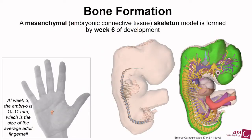Early in development, around week six, a mesenchymal skeleton forms. This embryonic connective tissue condenses in the form of a skeleton. At this point of development, the neural tube has started to form and has these little vesicles, so we're starting to see parts of the central nervous system coming — but the embryo is about the size of the average human fingernail. So this is quite early.